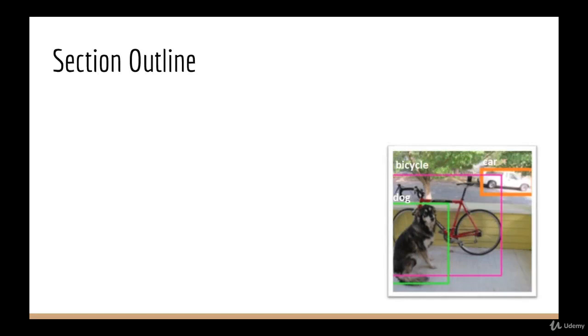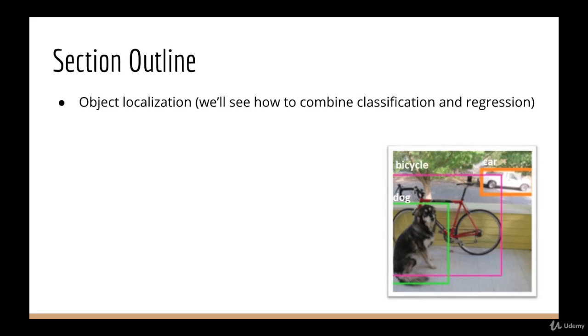So what are we going to cover in this section? First, we are going to build up from concepts we already know. We know about classification and regression. Now we are going to put these together and see how we can do a task called object localization. Next, we are going to broaden our scope a little bit and go from object localization to object detection.